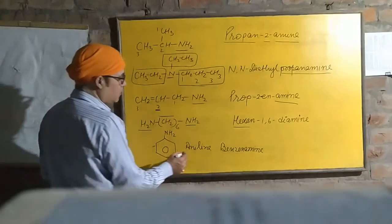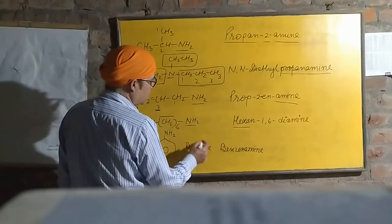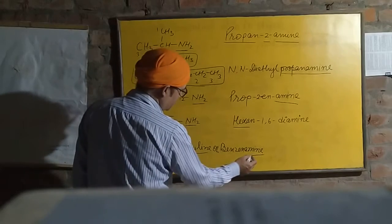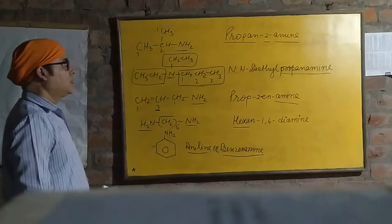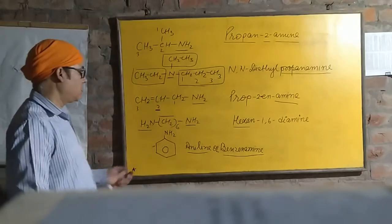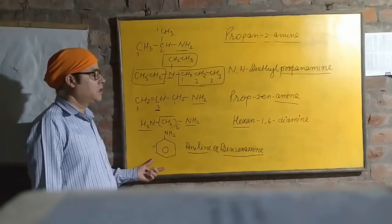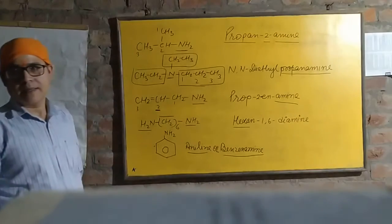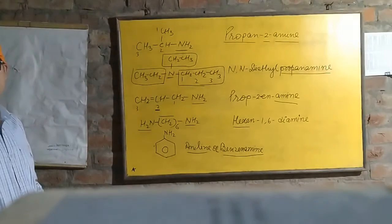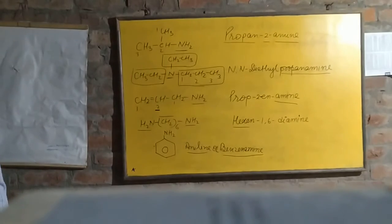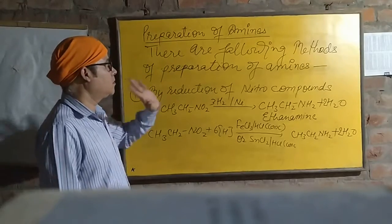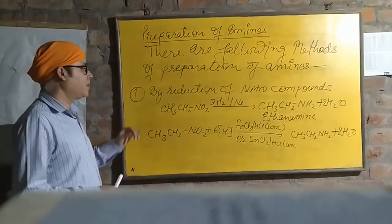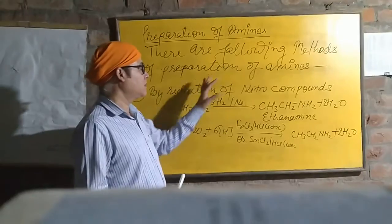Next is aromatic amine, which is commonly known as aniline, or you can say benzene amine. This way you can do some more practice of the nomenclature of amines. You can note down by following the video. Next, we have a lot of methods for the preparation of amines.